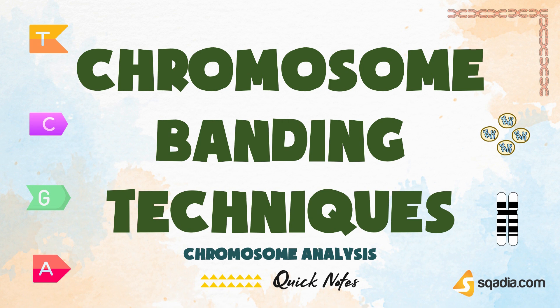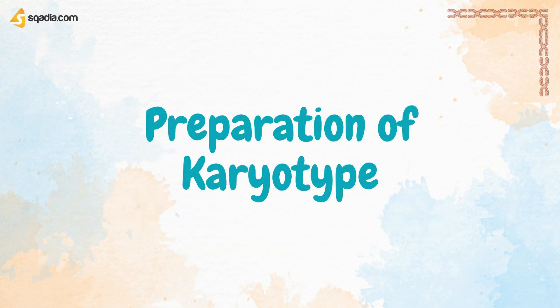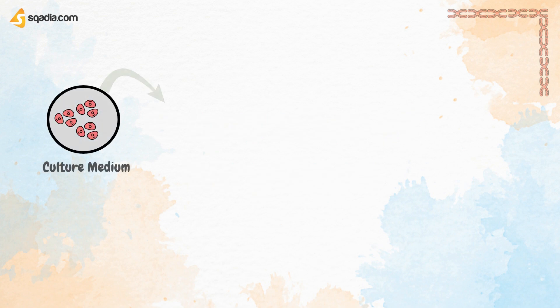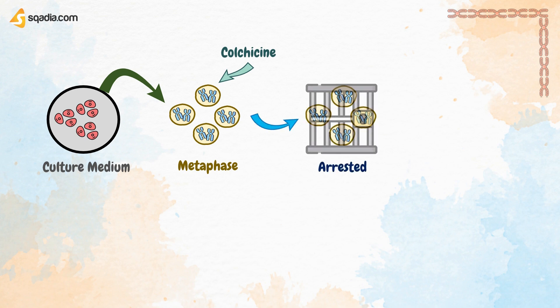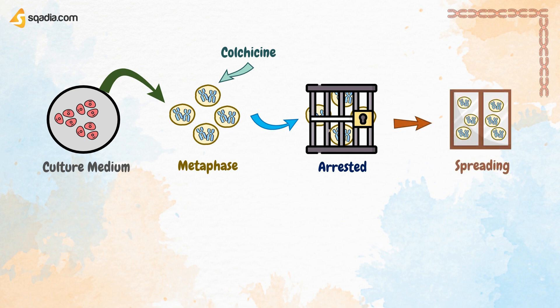As we have discussed the preparation of karyotypes, cells are grown in short-term culture. The cells enter metaphase of mitosis, and the chromosomes are not allowed to enter anaphase — they are arrested at metaphase. These chromosomes are treated with a mitotic inhibitor such as colchicine, which is why cells are arrested at metaphase. Cells are then spread on a glass slide.